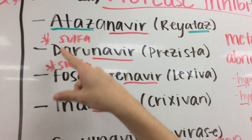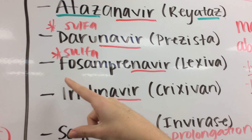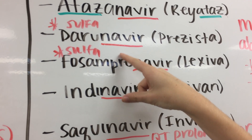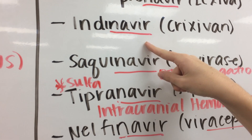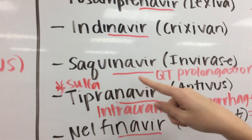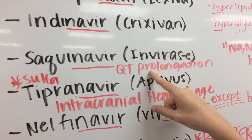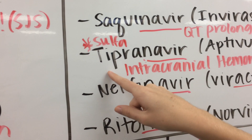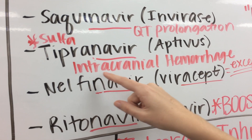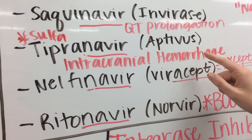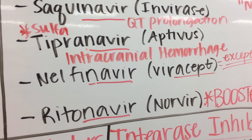Continuing protease inhibitors: indinavir, saquinavir — which carries a risk of QT prolongation — and tipranavir, which also has a sulfa allergy component and is additionally associated with intracranial hemorrhage as an adverse effect that we need to monitor.